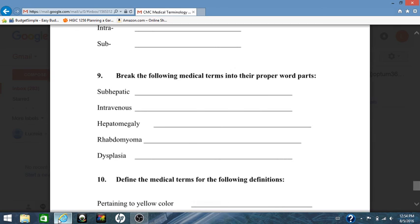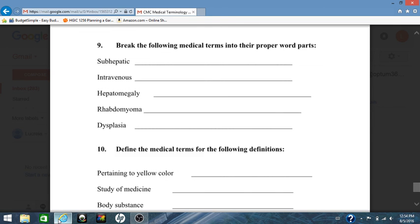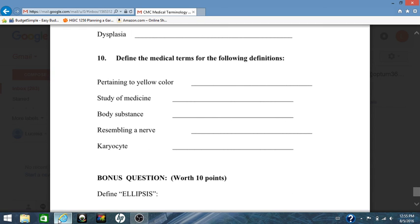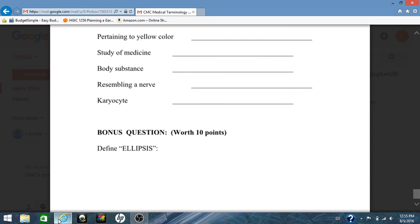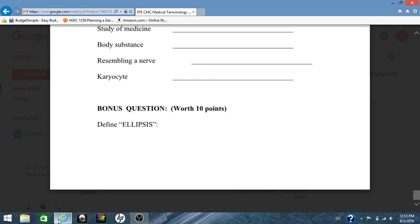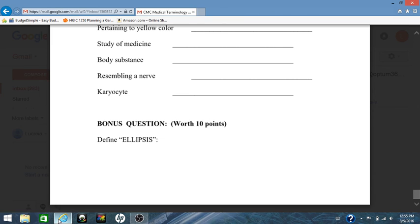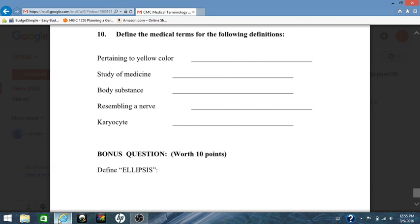Eight, define the following prefixes. Nine, break the following medical terms into their proper word parts. So, sub-hepatic, we've broken them up. Where I used to tell you analyze, analyze these terms. Ten, define the medical terms for the following definitions. So, I've given you definitions. Tell me what the medical term is. And your bonus question for this bonus assignment is ellipsis. Now, I have not given you this term. I'm asking you to define that. Google, pull out a medical dictionary, pull out whatever resource you can, and give me a definition for ellipsis.